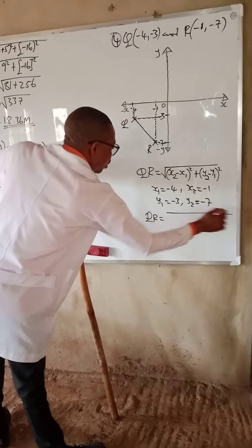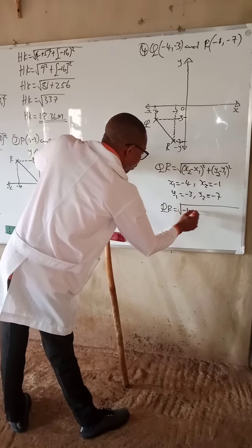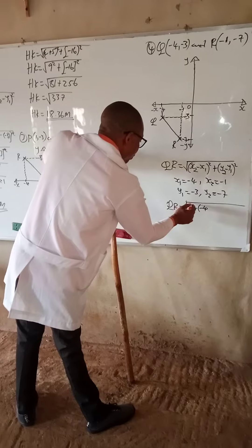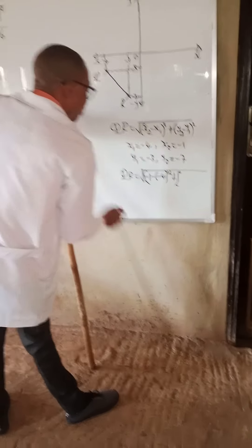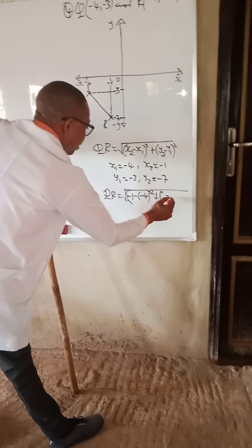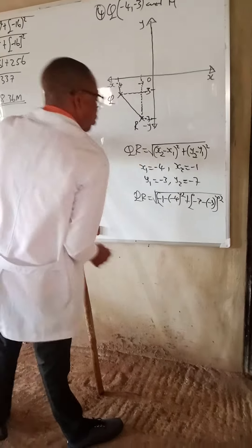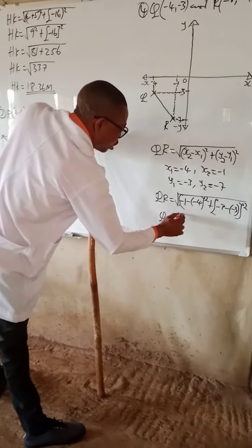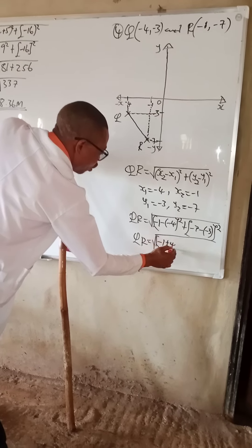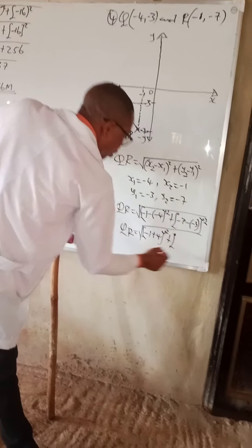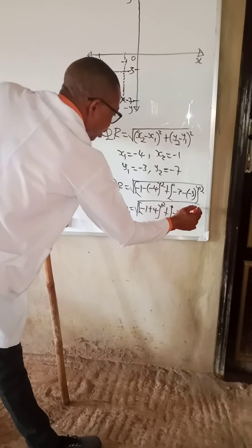QR equals the square root of (minus 1 minus (minus 4)) all squared, plus (minus 7 minus (minus 3)) all squared. Minus times minus gives plus, so we have (minus 1 plus 4) squared plus (minus 7 plus 3) squared.